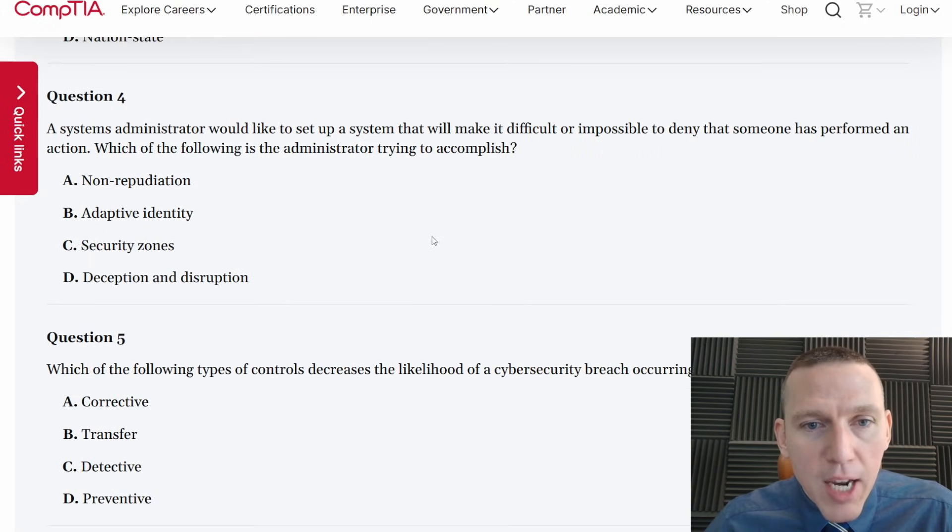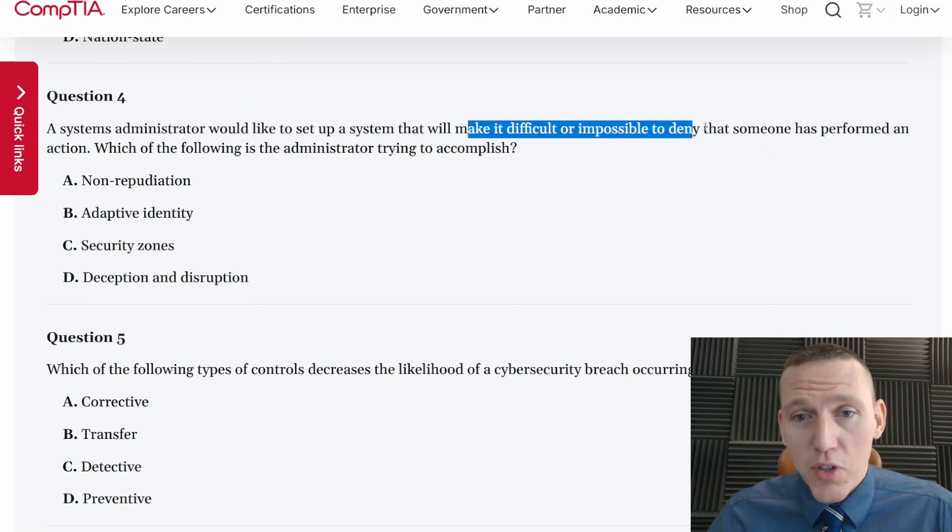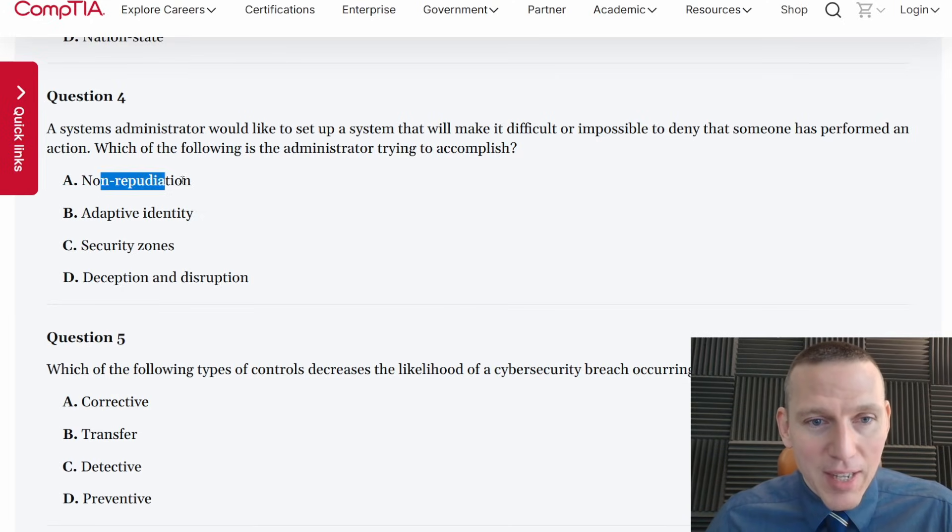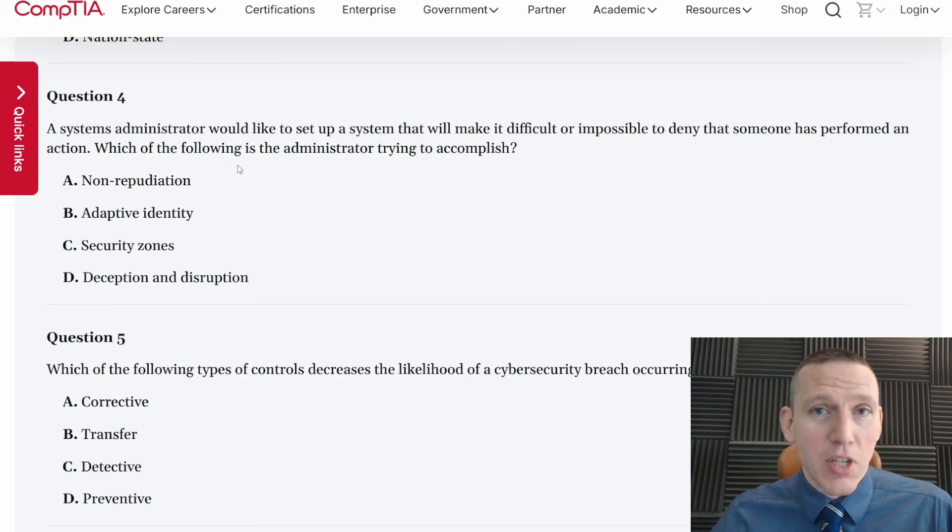Number four, a systems administrator would like to set up a system that will make it difficult or impossible to deny that someone has performed an action. So this is describing non-repudiation. Non-repudiation is basically ensuring that all actions are tracked, but the word itself is a double negative. You're not able to repute that you did something. Because this is worded so awkwardly, I know immediately it's non-repudiation.